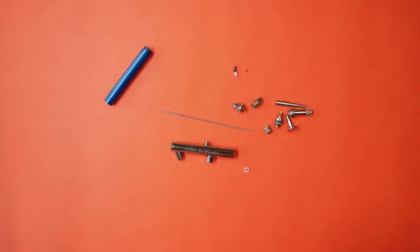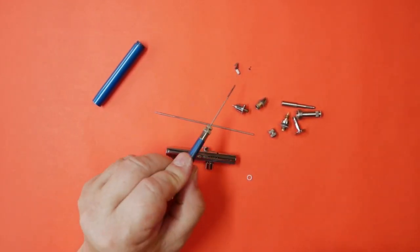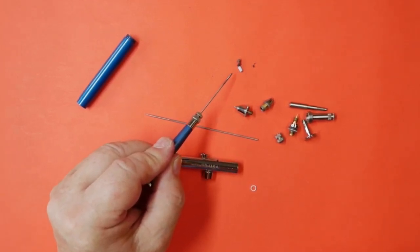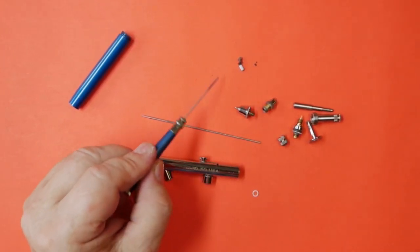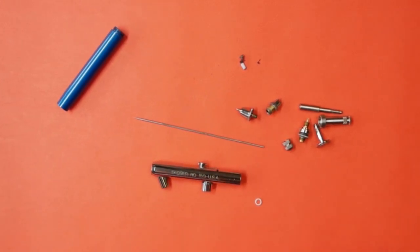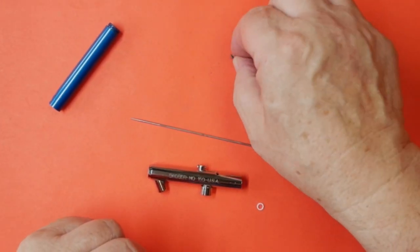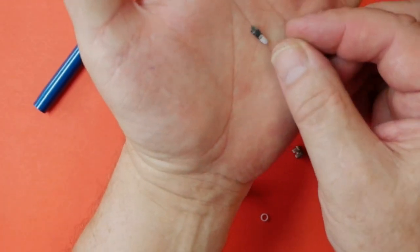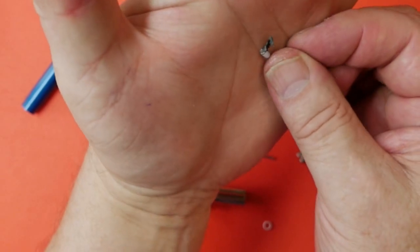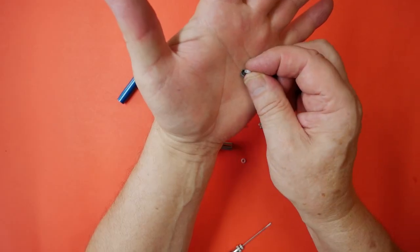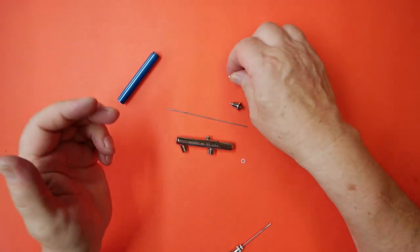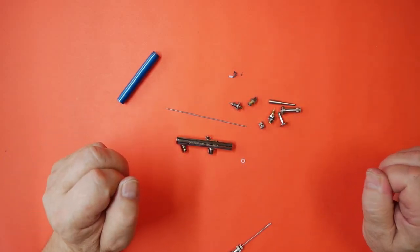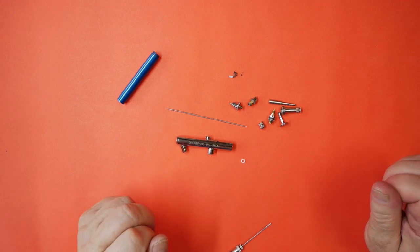Having removed the needle bearing, as you can see this was rather caked up with a lot of dried paint I'm assuming. The actual needle bearing is well and truly caked up with it, and this was holding everything into the airbrush and causing the major issues.